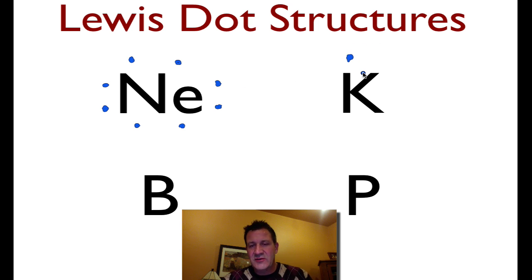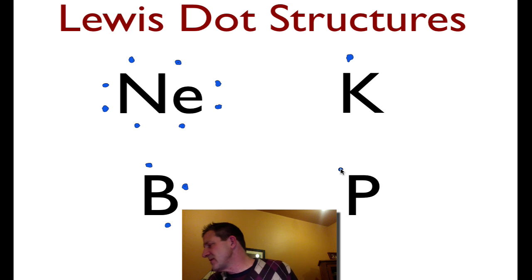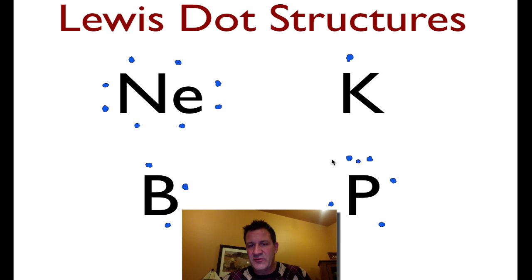Potassium has one valence shell electron, we can just show it like that. Boron has three — one, two, three — count over from the left-hand side of the periodic table. This is phosphorus; we can count all the way across: sodium, magnesium, aluminum, silicon, and phosphorus means there's five. So one, two, three, four, and the fifth one — then we start pairing them up based on the Pauli exclusion principle. So that is the Lewis dot structures for those elements.